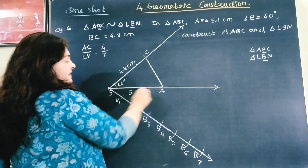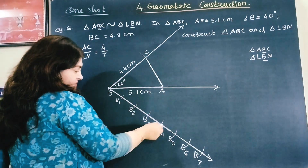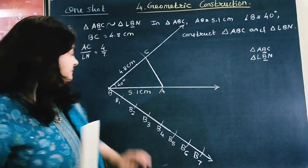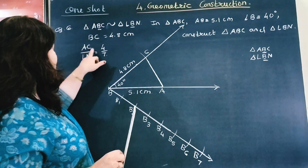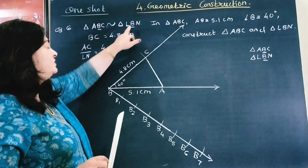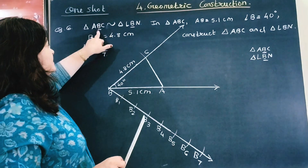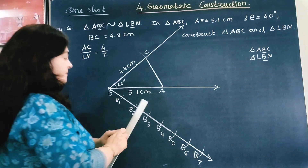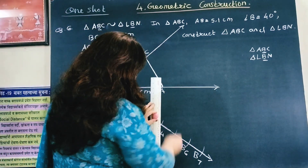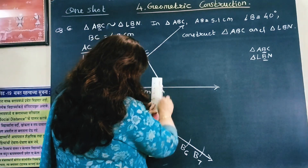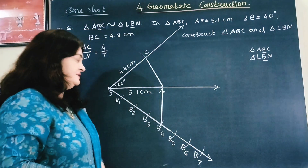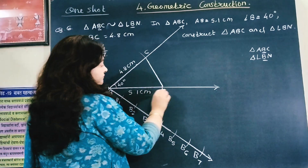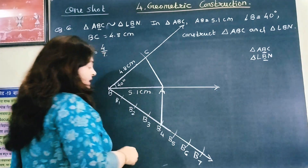Our smaller triangle ABC has AC = 4 parts and LN = 7 parts. So join B4 to A, because AC is 4 and LN is 7 — B4 corresponds to the smaller triangle. This is my point A and I have joined B4 to A.